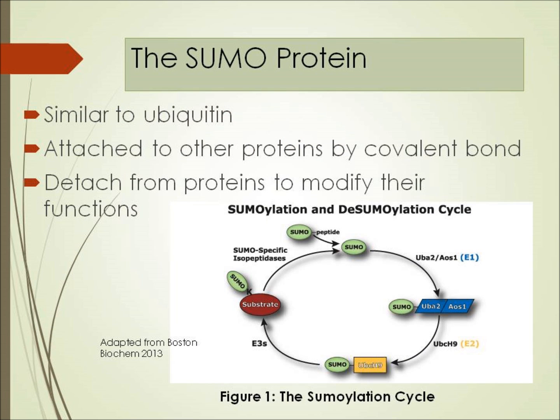The SUMO protein, similar to ubiquitin, attaches to other proteins by covalent bond and detaches from proteins to modify their function. As you can see in Figure 1, the sumoylation cycle shows sumoylation and de-sumoylation cycles, and that UBC H9 plays a role. The SUMO, as we said earlier, attaches to a substrate by covalent bonds.